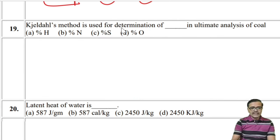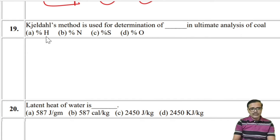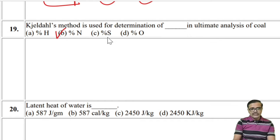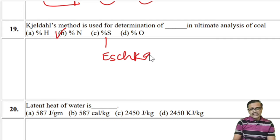The Kjeldahl method is used for determination of nitrogen in ultimate analysis of coal. For hydrogen, there is the combustion method; for nitrogen, the Kjeldahl method; and by the Eschka method for sulfur. So the answer is the second option: nitrogen.